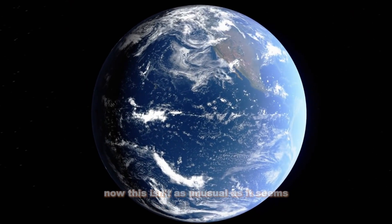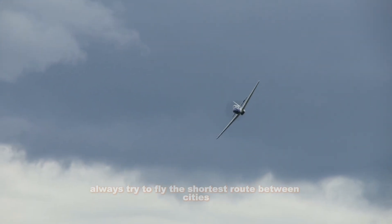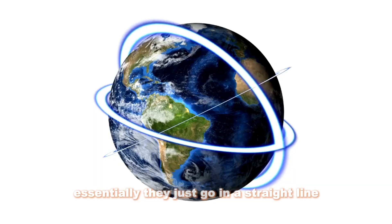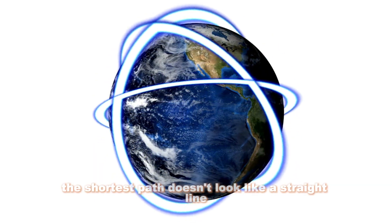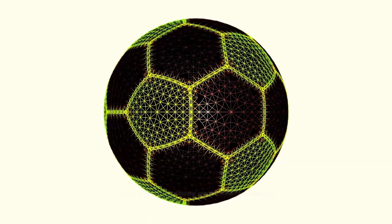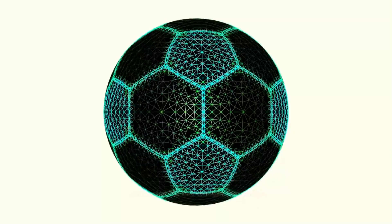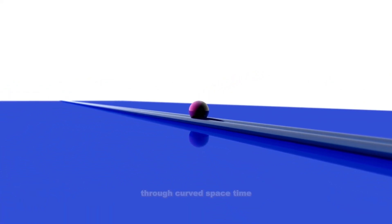Geodesics. Now, this isn't as unusual as it seems. Airplanes, for example, always try to fly the shortest route between cities. Essentially, they just go in a straight line, but since the Earth's surface is curved, the shortest path doesn't look like a straight line. These shortest paths over curved surfaces are called geodesics, and we use that same word, geodesics, for the straight line paths followed by inertial observers through curved spacetime.